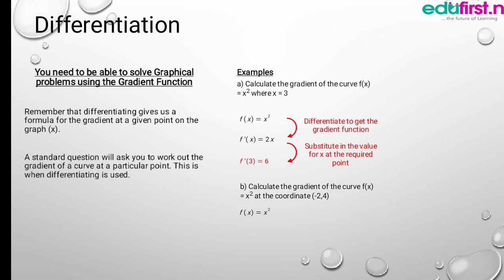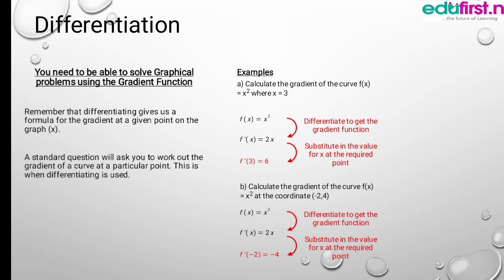The same approach applies to the second example. Here x is now minus 2. When you differentiate x squared you get 2x. After differentiating, substitute x equals minus 2, and you have 2 times minus 2, which gives minus 4, with a graph illustrated below.